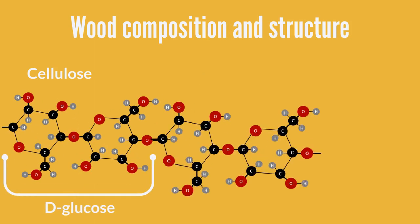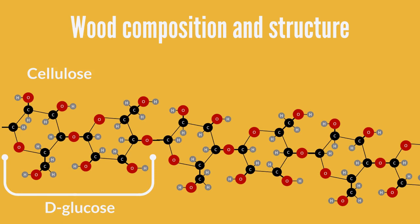Cellulose is a polysaccharide consisting of a linear chain of several hundred to many thousands of linked D-glucose units. Carbon, oxygen, and hydrogen atoms are linked by chemical bounds.